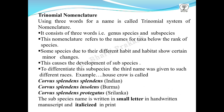Now we come to trinomial nomenclature. Tri means three, nomial means naming, so using three words for the name is called the trinomial system of nomenclature. It consists of three words: genus, species, and subspecies. This nomenclature refers to names for taxa below the rank of species. Some species show certain minor changes due to differences in environment because of their different habits and habitat, causing the development of subspecies.